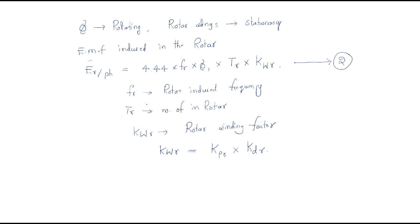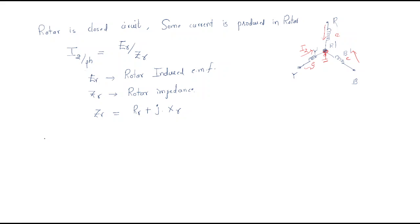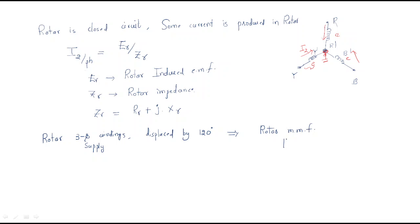In the last session we discussed the working of the three-phase induction motor up to the induced currents of the rotor circuit. The rotor has three-phase windings displaced by 120 degrees, so it generates a three-phase supply. This rotor MMF will produce a rotor rotating magnetic field (rotor RMF), which also rotates with synchronous speed.